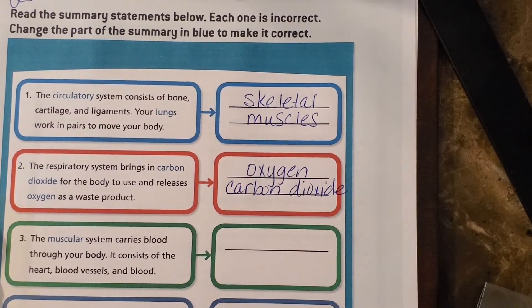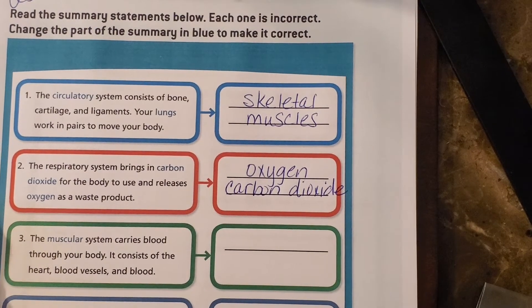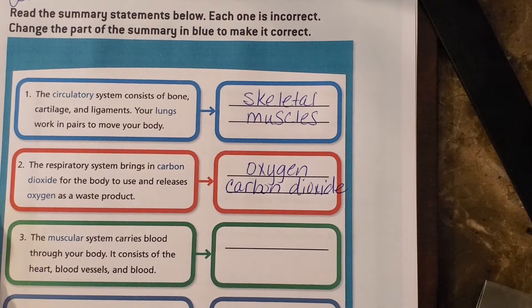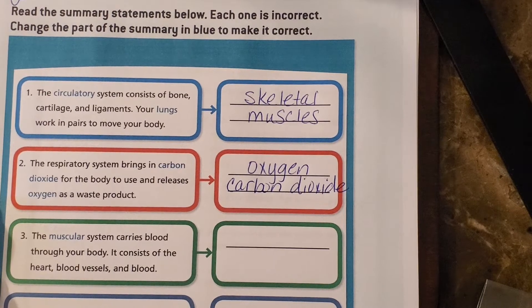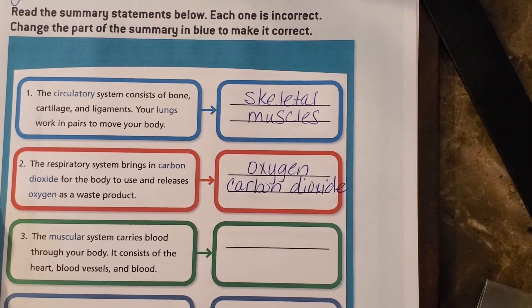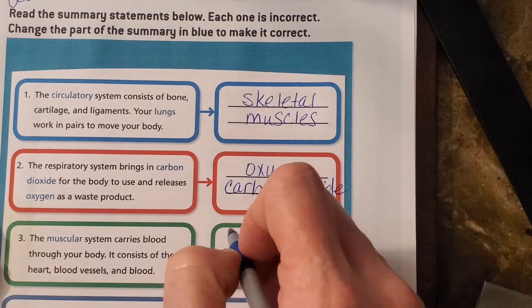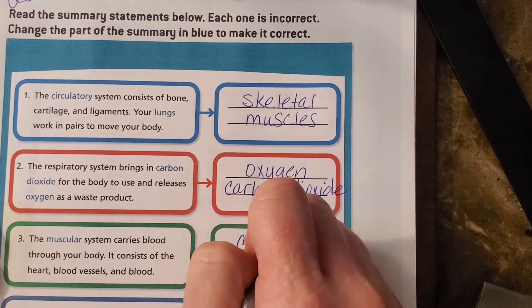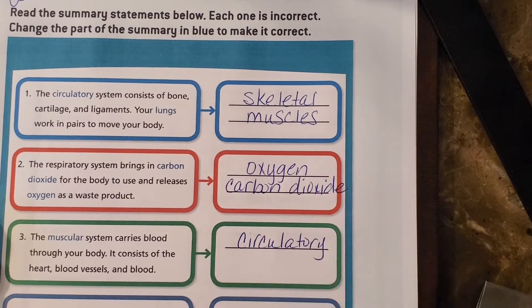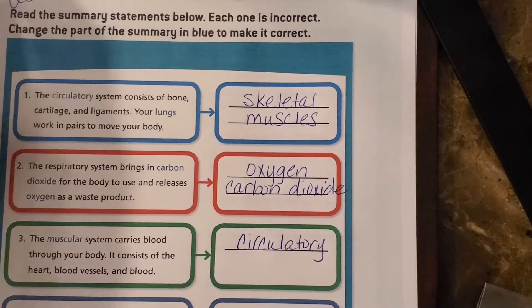The respiratory system brings in oxygen for the body to use and releases carbon dioxide as a waste product. Number three: the muscular system carries blood through your body. It consists of the heart, blood vessels, and blood. Does your muscular system consist of the heart, blood vessels, and blood? No. The circulatory system does. So you're going to write 'circulatory' on the line.